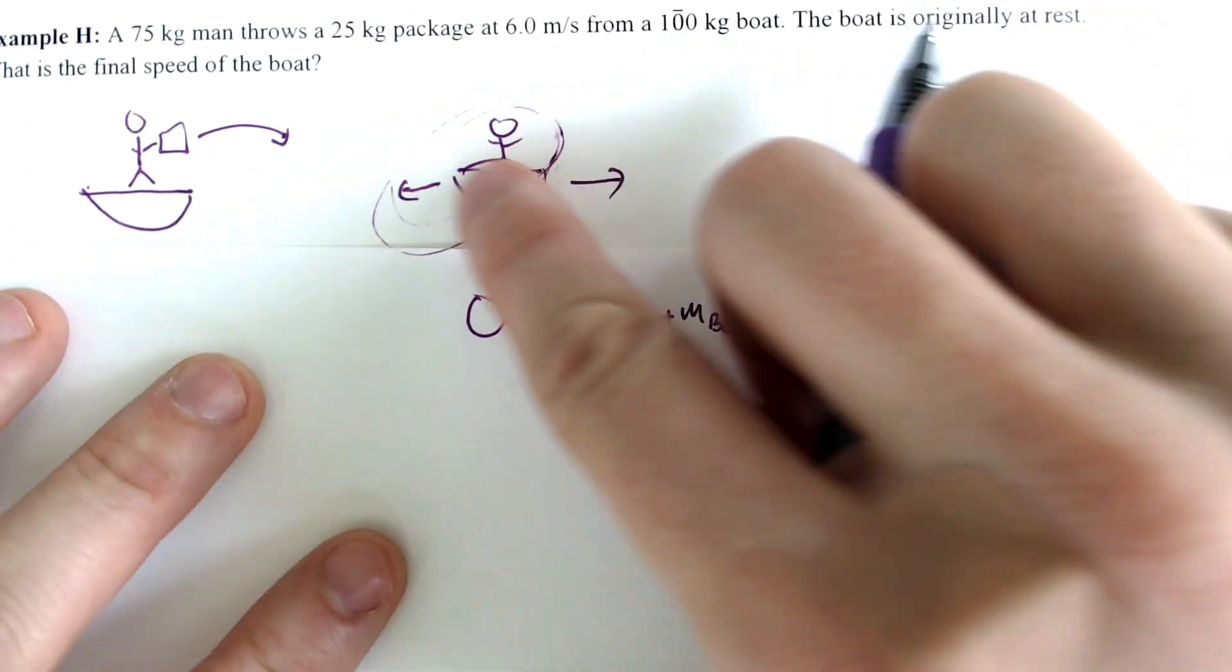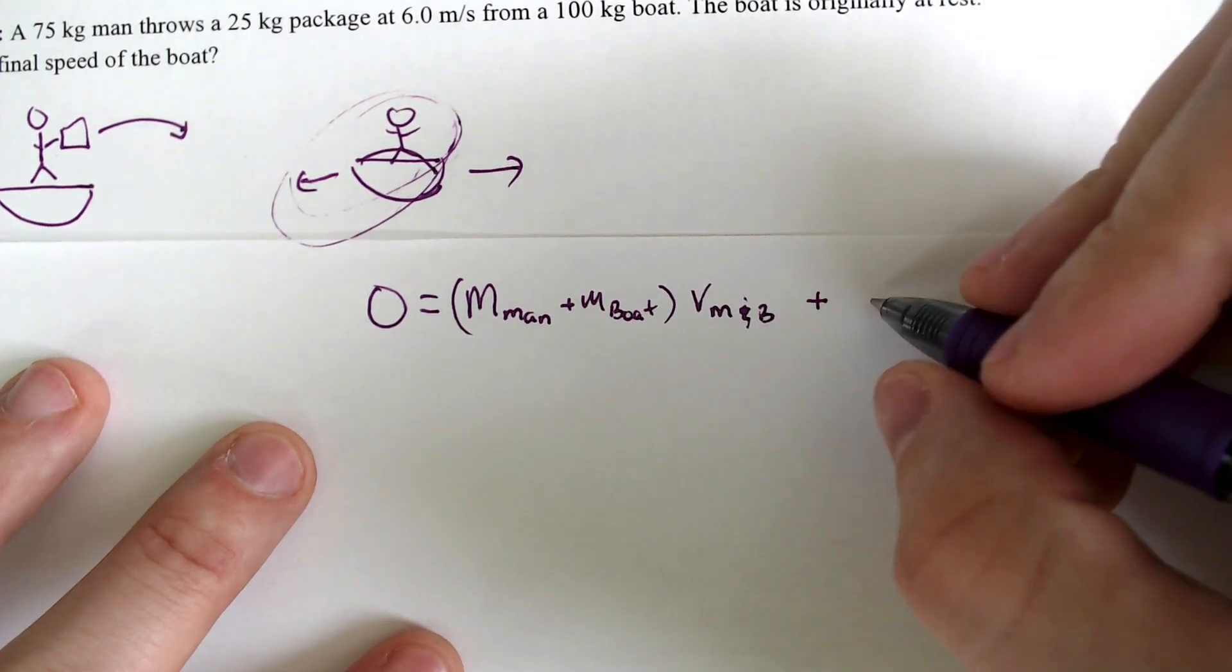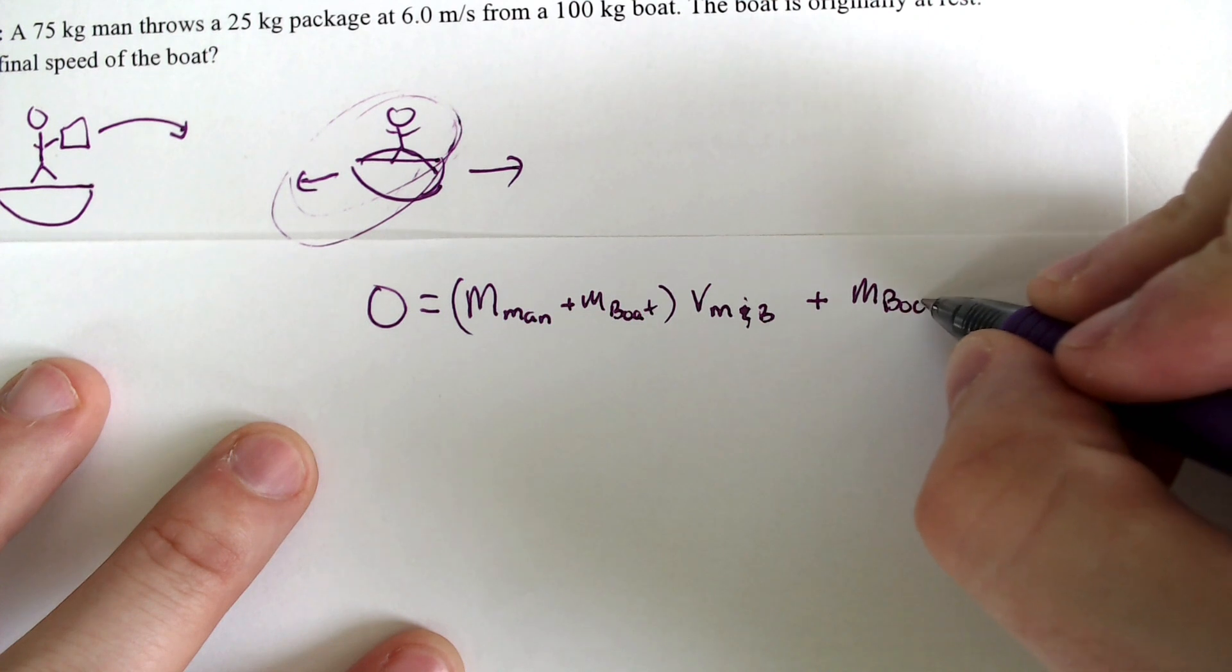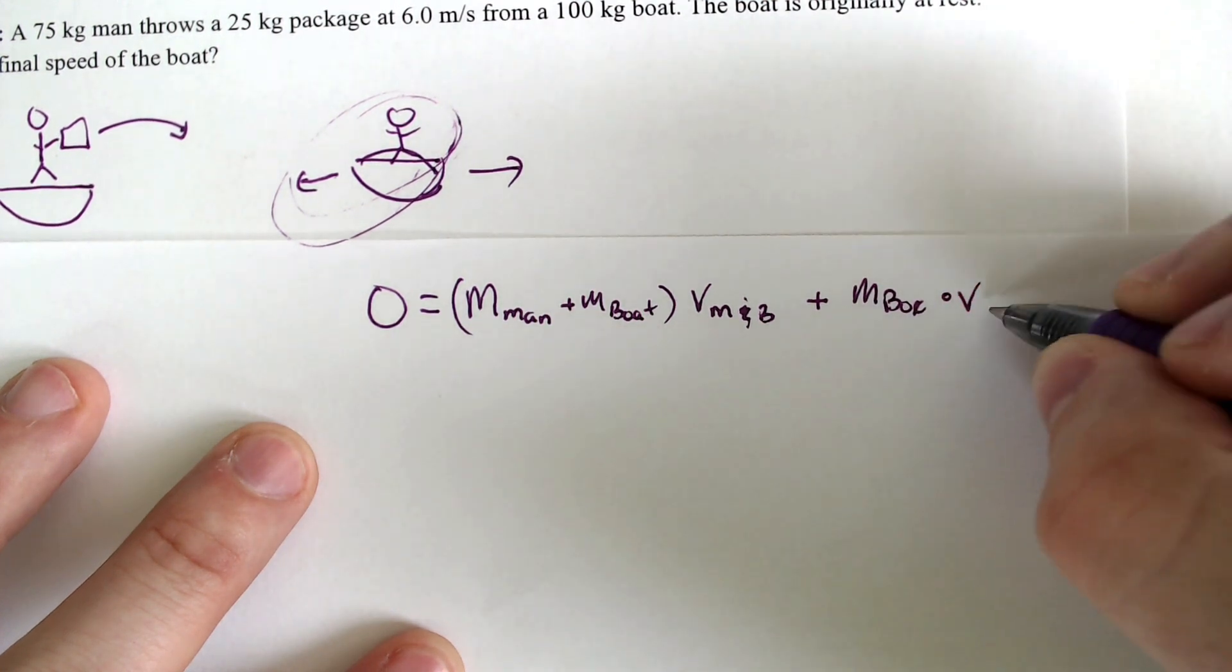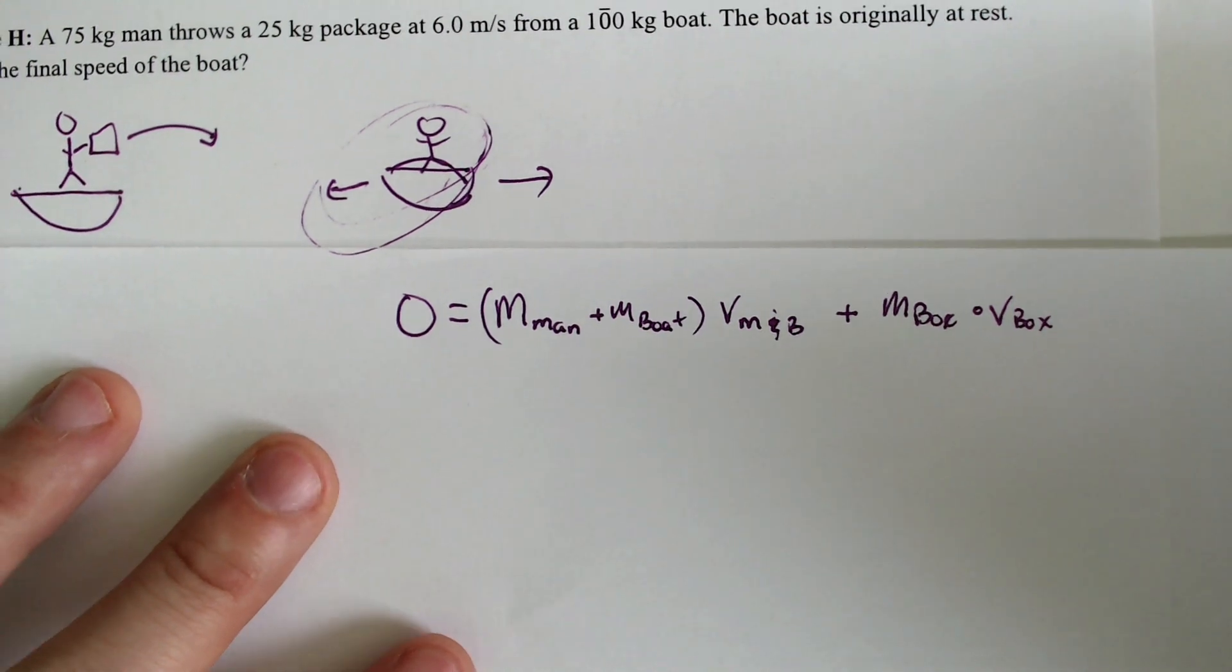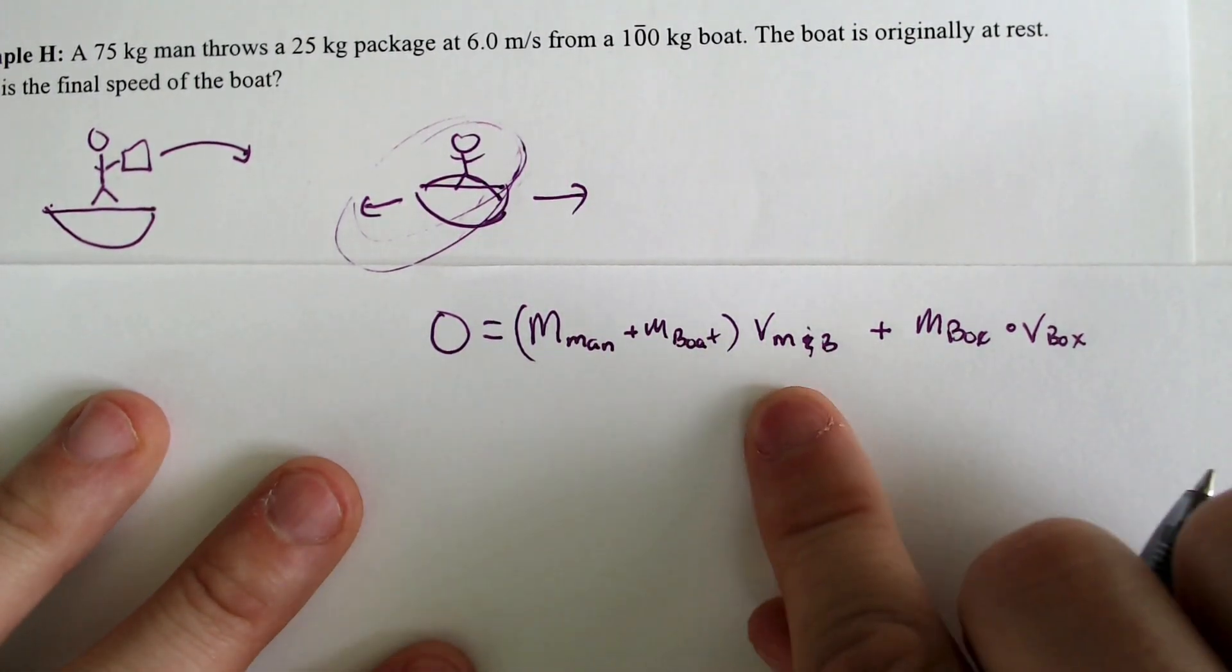See how here we have the man and the boat. That's the mass of the entire thing. But it would have to be added with the mass of the pack, or the box, times the velocity of the box. So here we have the boat and the man put together.